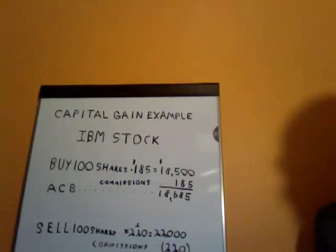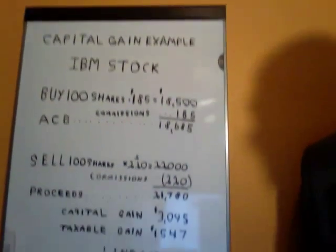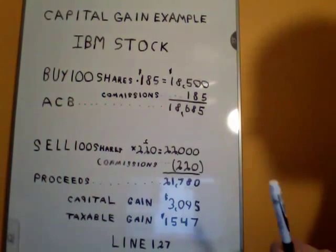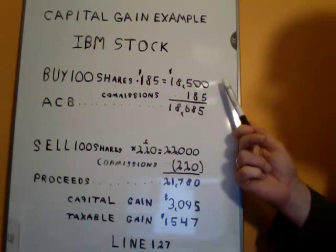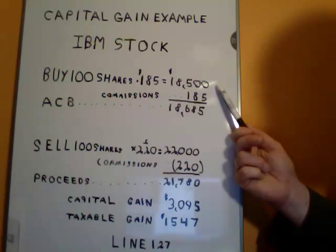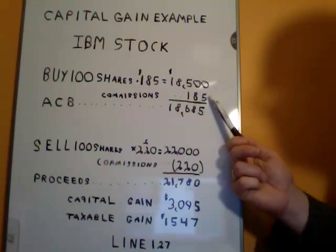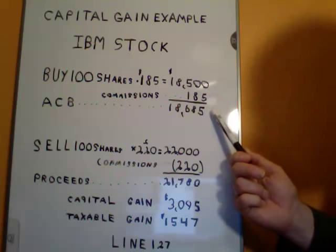I'm going to show you a complete example of how we calculate a capital gain here in Canada. This is my board where I've done an example. In this example, we have bought IBM stock — 100 shares at $185, which is pretty much the market value of an IBM share in November 2011. When I made this transaction, I also incurred 1% commission costs, which is $185. That makes my ACB in this example $18,685.